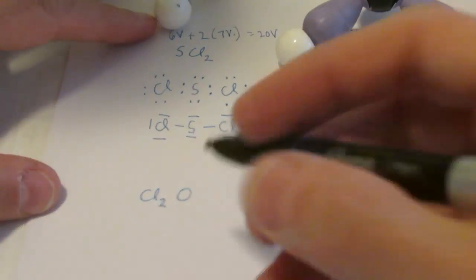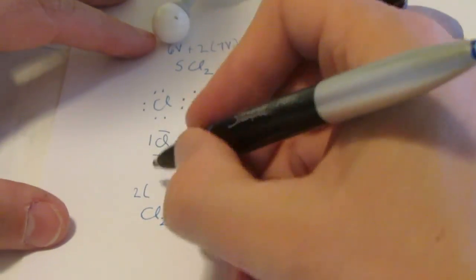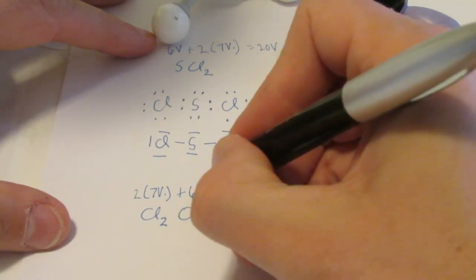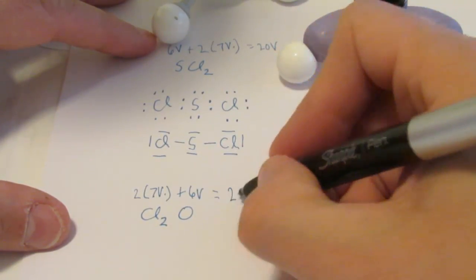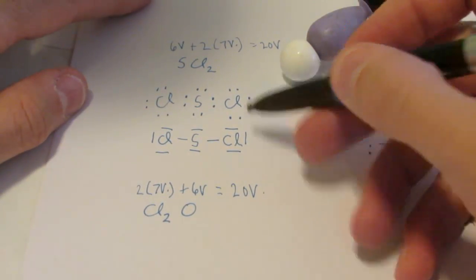Alright, let's take a look at Cl2O. There's two chlorines, group 17, so 7 valence a piece. And oxygen's in group 16, 6 valence. So 14 plus 6, that's 20 valence to work with. Wow, deja vu. Don't you think that's going to be a lot like the one above?